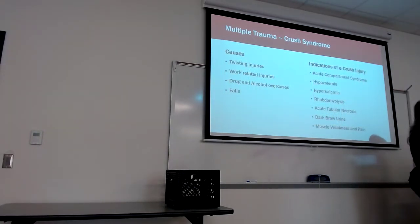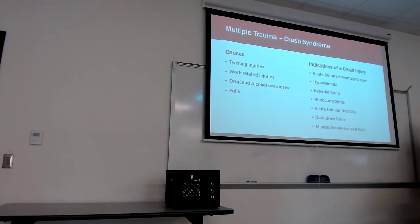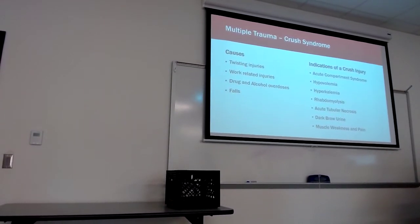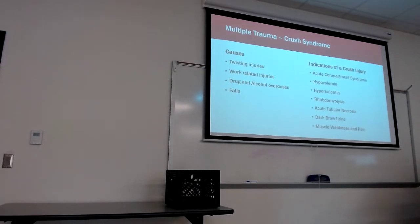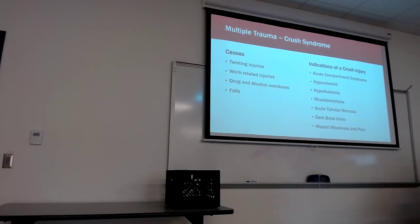Causes of crush syndrome include twisting injuries, work-related injuries, drug and alcohol overdose where patients lie in odd positions and cut off circulation to an extremity, and falls. I had an elderly gentleman who was moving a dresser to vacuum behind it, lost his balance, and the dresser fell on him — that dresser edge landing just below his ribs and abdomen.